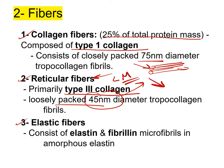Reticular fibers cannot be resolved in light microscopy; we have to use a special stain called silver impregnation to detect them. The third type is the elastic fiber, which consists of elastin and fibrillin microfibrils in amorphous elastin. So we have collagen fiber as the most common, reticular fiber which is type 3 collagen, and finally the elastic fiber, which is the largest in diameter.